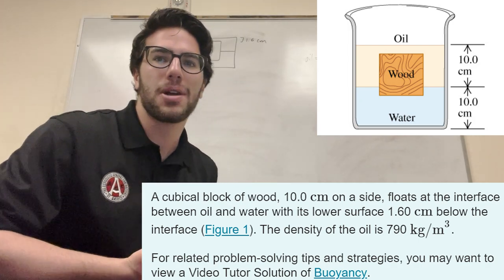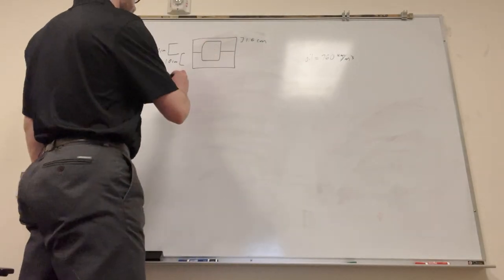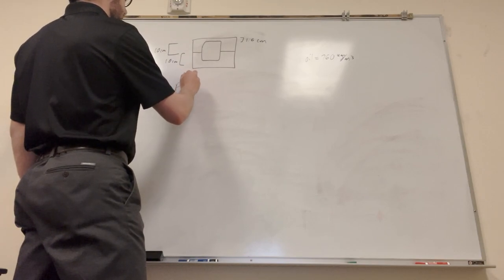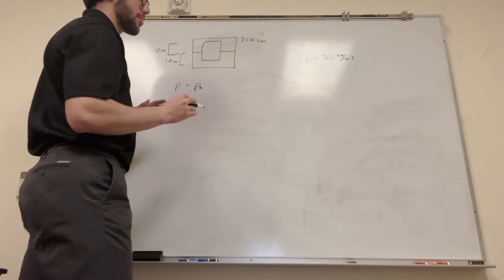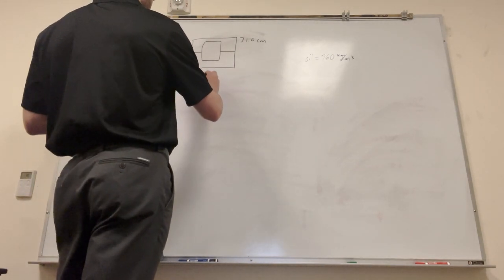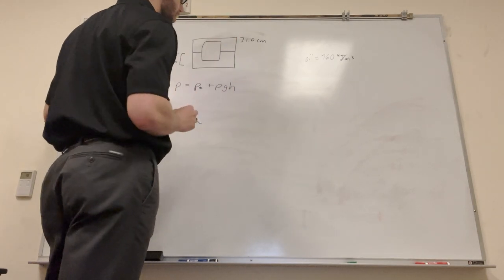Okay, so part one is find the gauge pressure at the top of the block. So if you're trying to find the pressure of something in a liquid, it's going to be equal to the pressure at the top, which is like the atmospheric pressure, but we're not going to worry about that, plus the density of the liquid times the gravity times the height of the liquid above it.